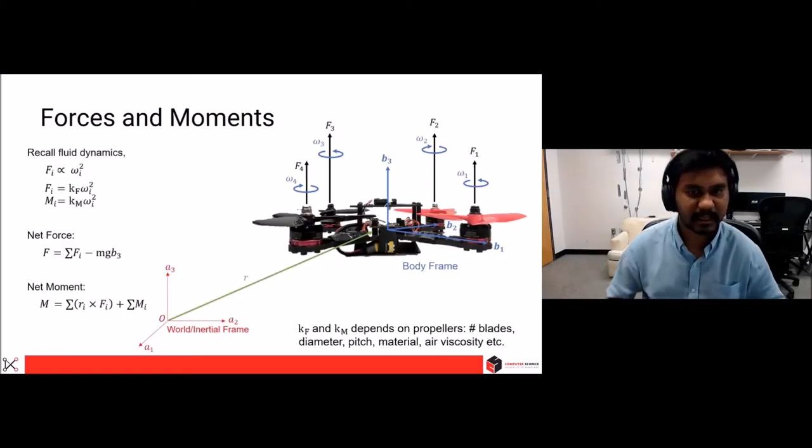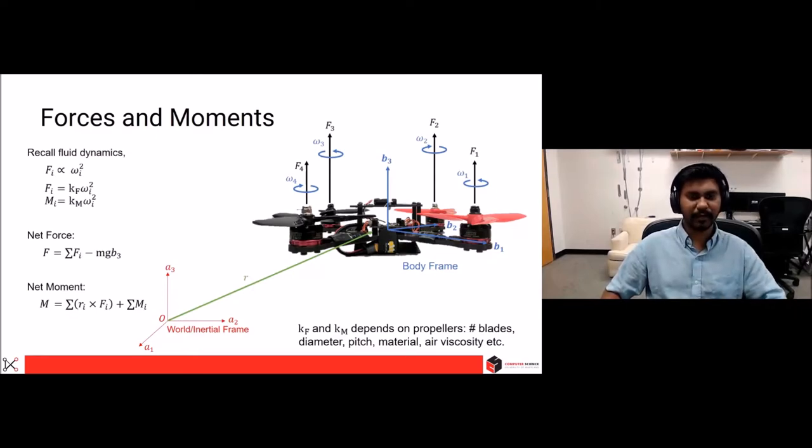So the idea here is we want to have an equilibrium state in which the sum of all forces and the sum of all moments is zero. That is, the quadrotor is stable when it's hovering at some point and it's also holding position.